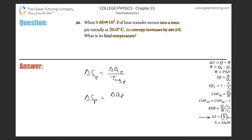We know that the meat pie is increasing in energy — it's initially at 20 degrees, and the heat transfer is into the meat pie — so we know this will be a positive value. And now let's look at the average temperature.